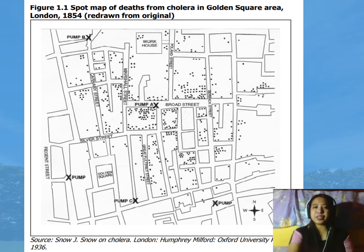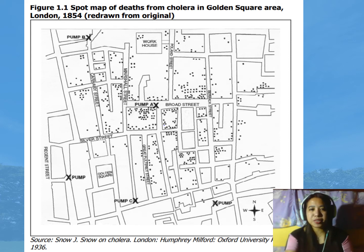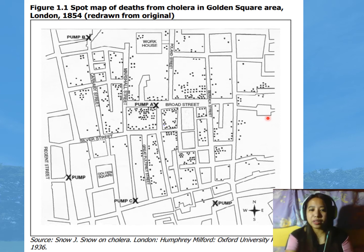Now let's consider the work of John Snow. What he did was to determine the area where the cases or patients lived and where they worked. Because water was a possible source of infection for cholera, he also identified the location of the pumps — Pump A, Pump B, Pump C, and all other pumps within the vicinity. He then analyzed all the maps and noticed that there were more cases near Pump A.